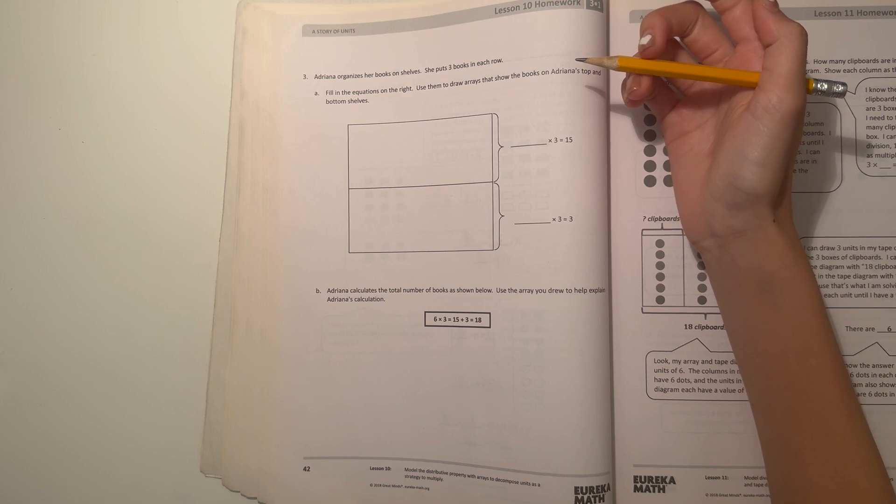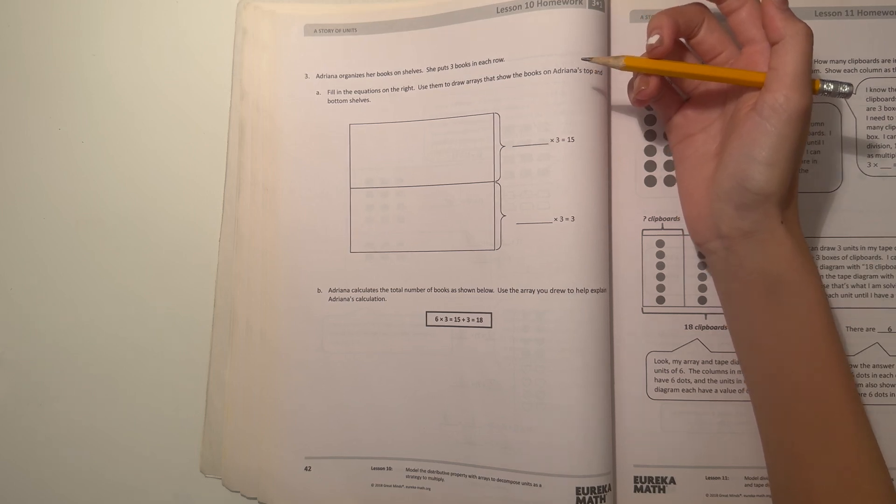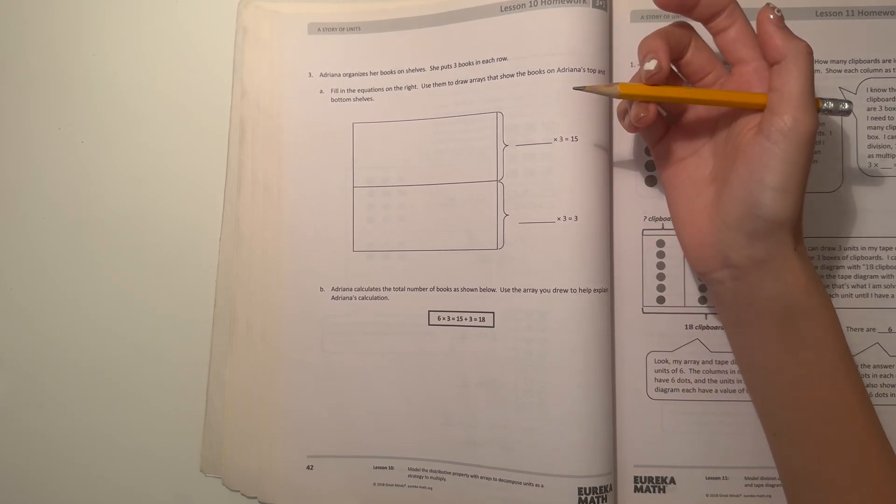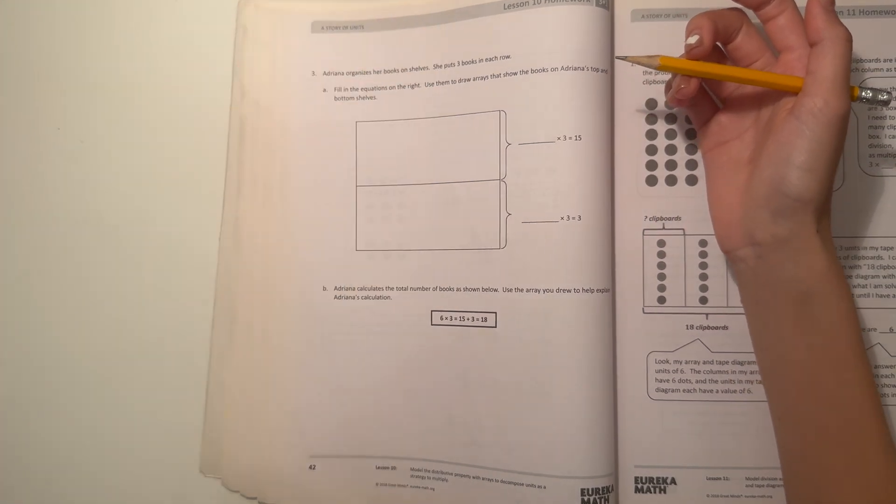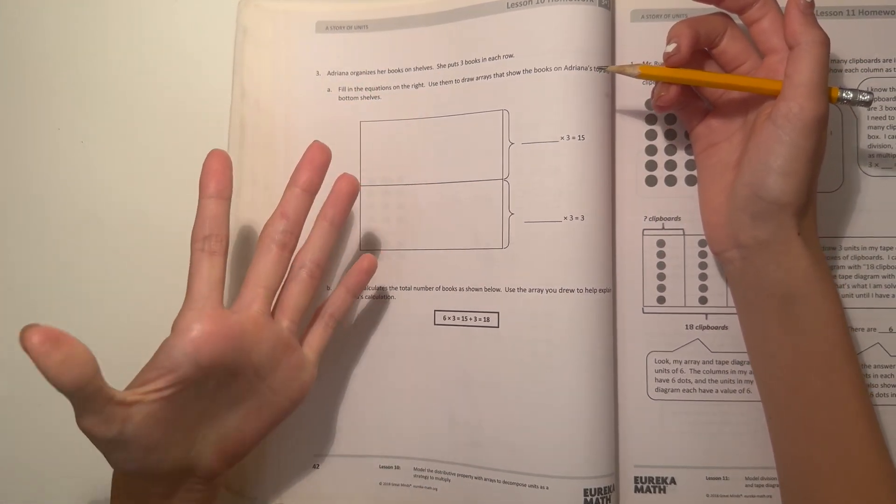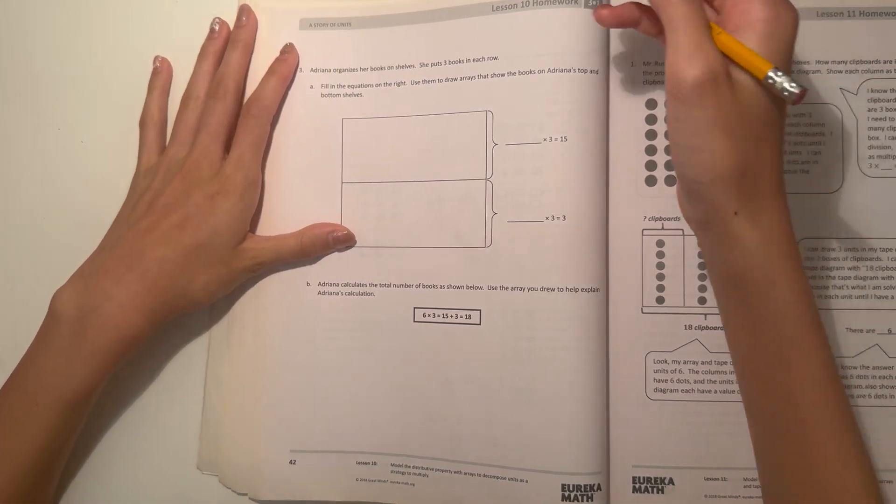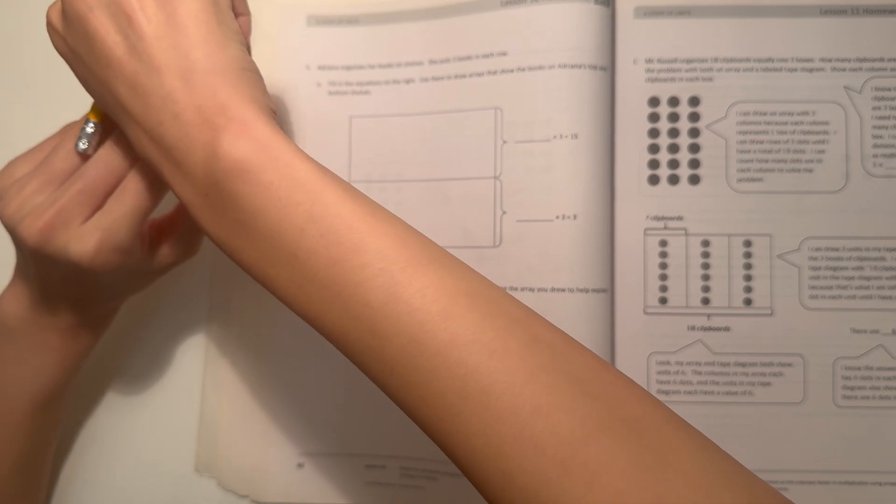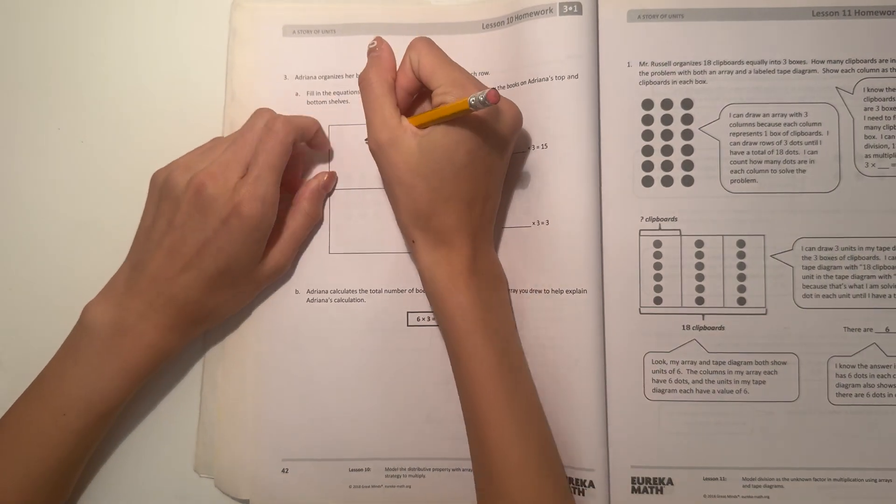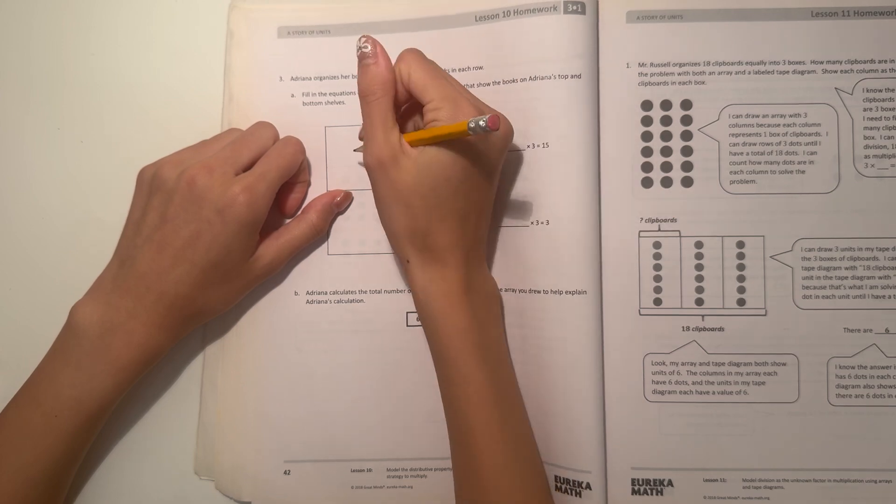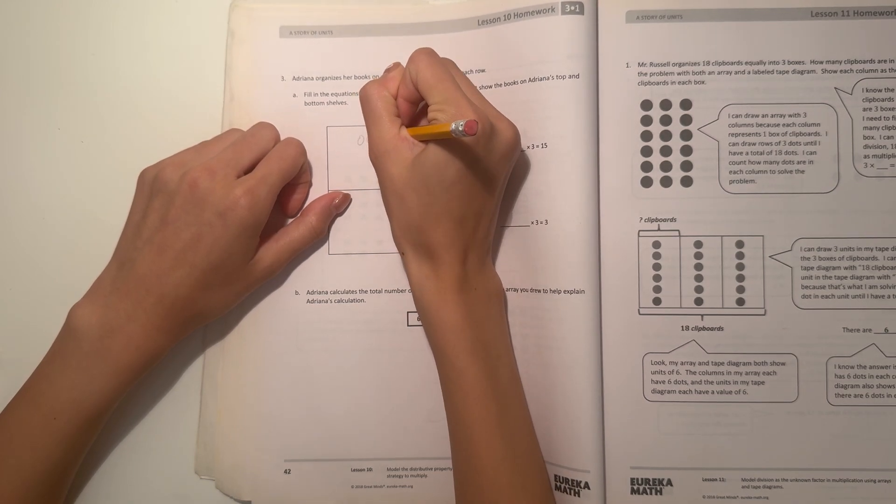So how many rows? What we can do to figure that out is skip count three, since we know there's three in each row. So you have three, six, nine, twelve, fifteen. So here we have five fingers, which means it's five rows. Here we have five rows. We can do like circles or something: one, two, three.